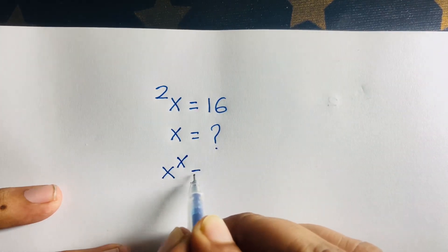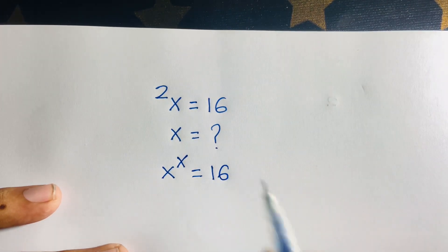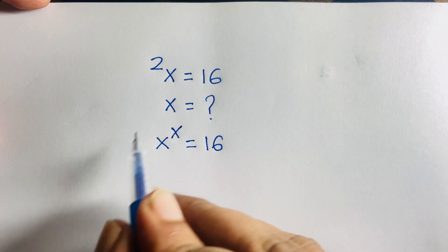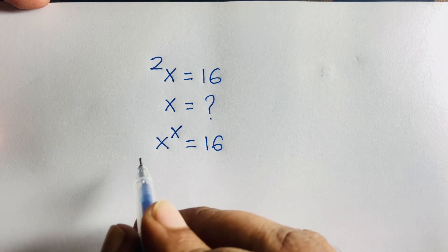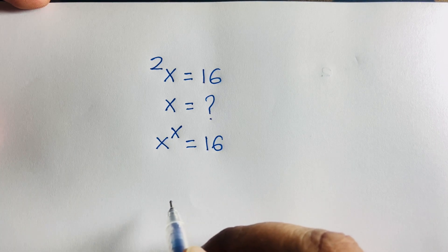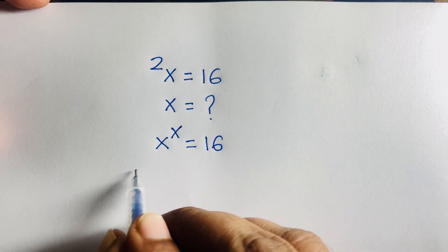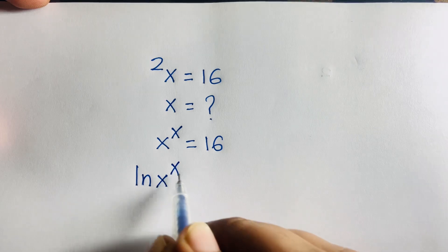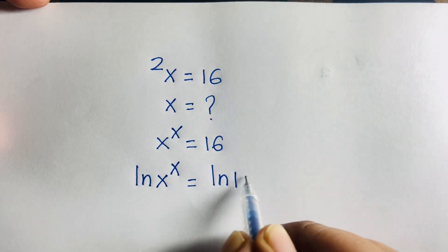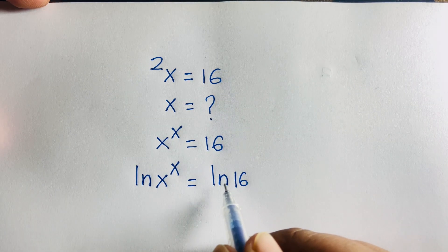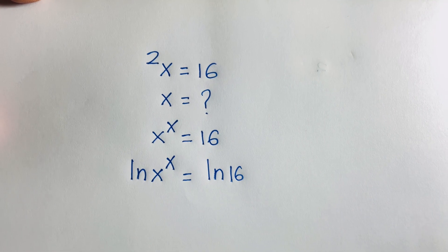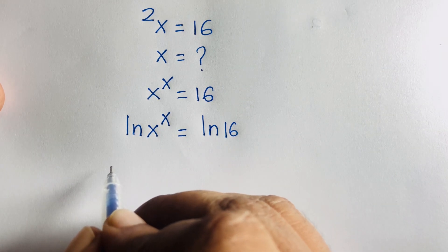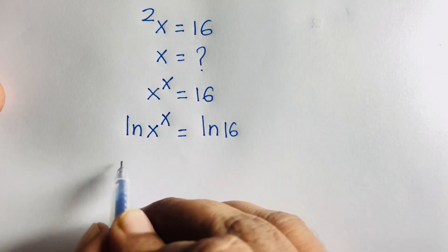We have x to the power x is equal to 16. To proceed, I apply the natural log to both sides. Using the logarithm power rule, the exponent x moves to the front, giving us x · ln(x) = ln(16).